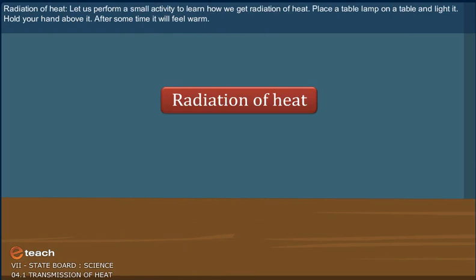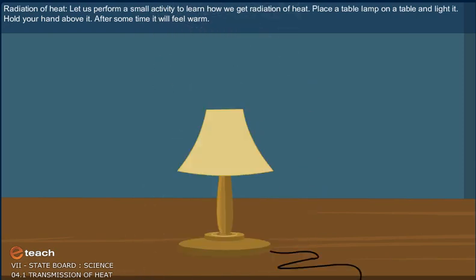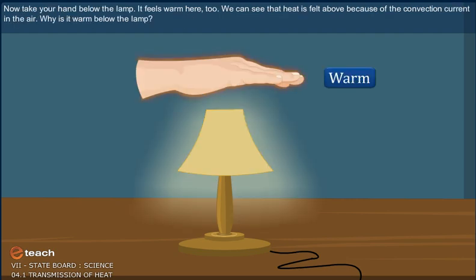Radiation of heat. Let us perform a small activity to learn how we get radiation of heat. Place a table lamp on a table and light it. Hold your hand above it. After some time, it will feel warm. Now, take your hand below the lamp. It feels warm here too.